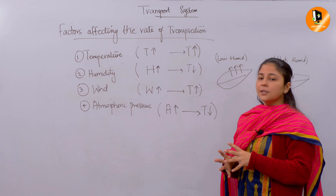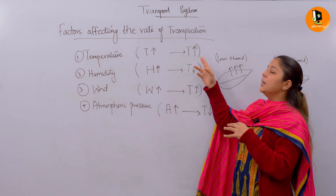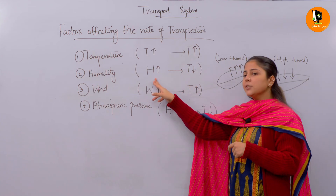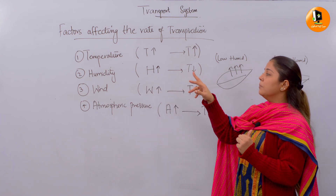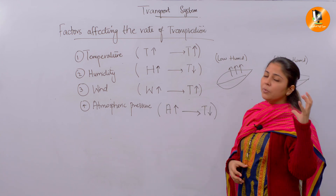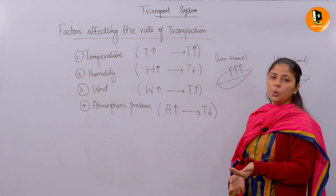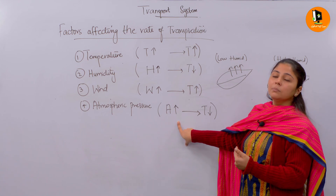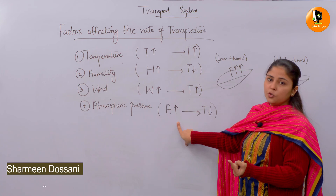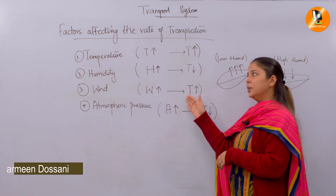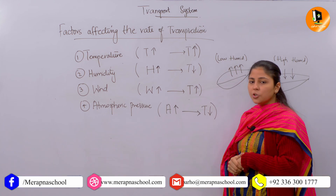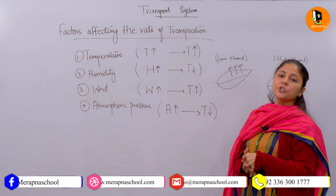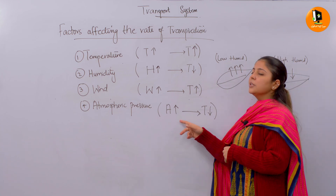To summarize: the first factor, temperature, and transpiration are directly proportional. The second factor, humidity, is inversely proportional — when one is high, the other is low. For humidity and atmospheric pressure, remember the concept of osmosis or diffusion as passive transport. The third factor, wind, is directly proportional — when one increases, transpiration also increases. The fourth, atmospheric pressure, is inversely proportional — when one increases, the other decreases.